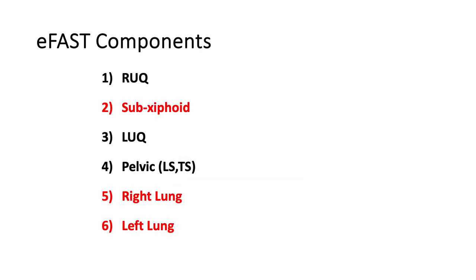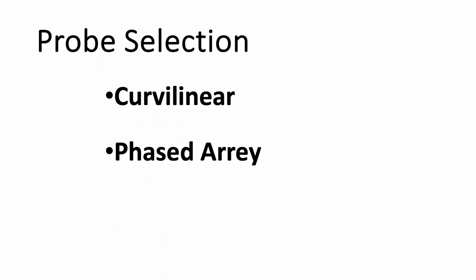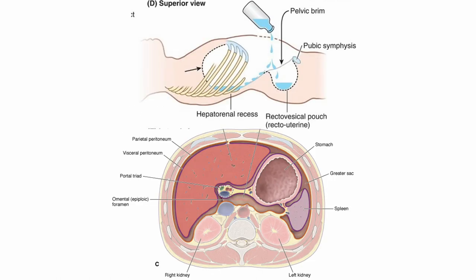This is the composition of the FAST scan: right upper quadrant, subxiphoid, left upper quadrant, and pelvis — comprised of longitudinal and transverse sections — plus right and left lung assessment. To perform the FAST scan we are examining the abdomen, so we need a probe with good penetration power. We can use the curvilinear probe or the phased array probe.